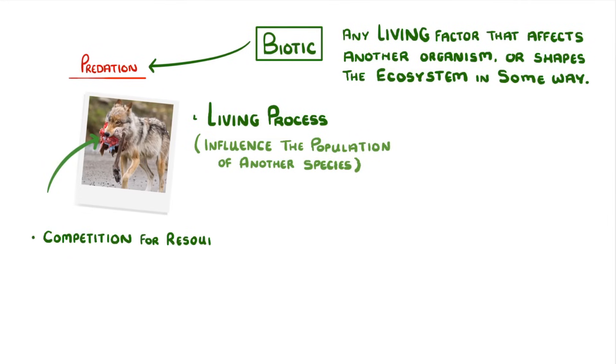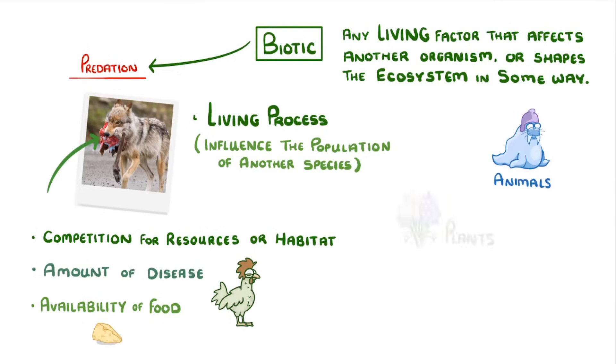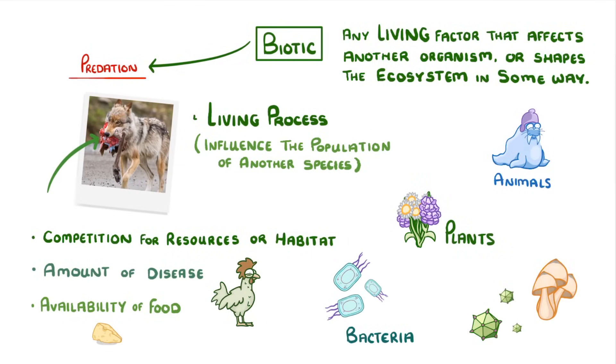Other biotic factors would be things like competition for resources or habitat, the amount of disease, and the availability of food. So if you're asked to find the biotic factors in an ecosystem, just think of all the ways that living organisms, whether they're animals, plants, bacteria, or anything else that's living, can affect one another.